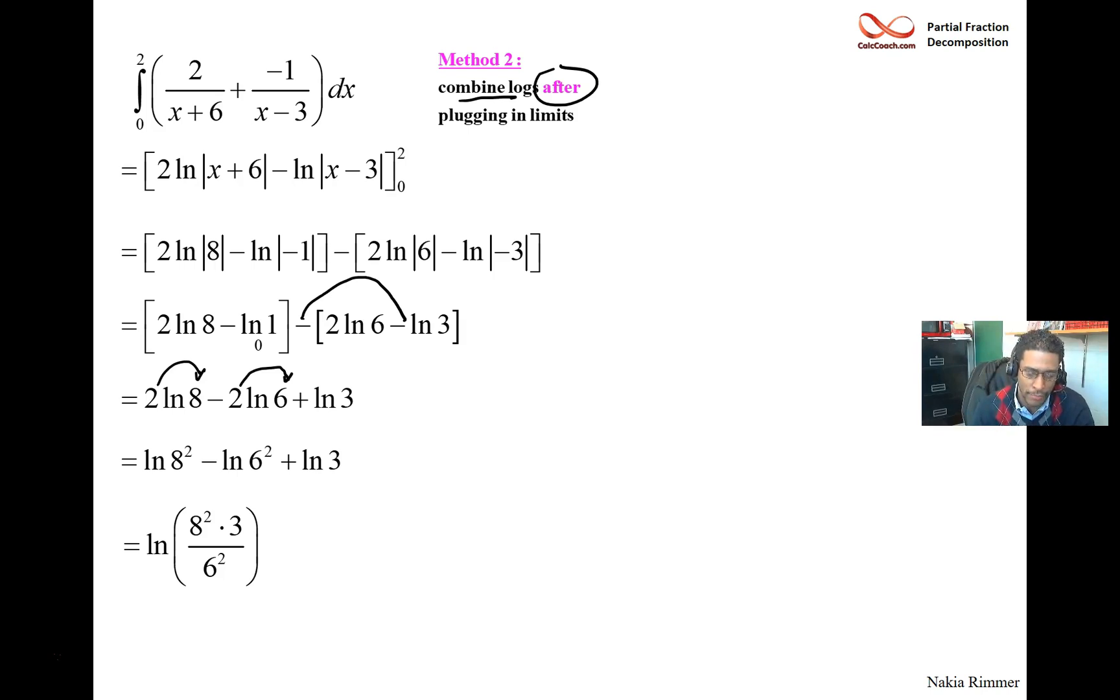And without a calculator, what you do is you just write them out in factors. So we have 8, 8, 3, and 6 and 6. And then we can cancel, however you like. Take the 6 and turn that, get rid of that 3 and turn that 6 into a 2. And then take this 2, turn the 8 into a 4.